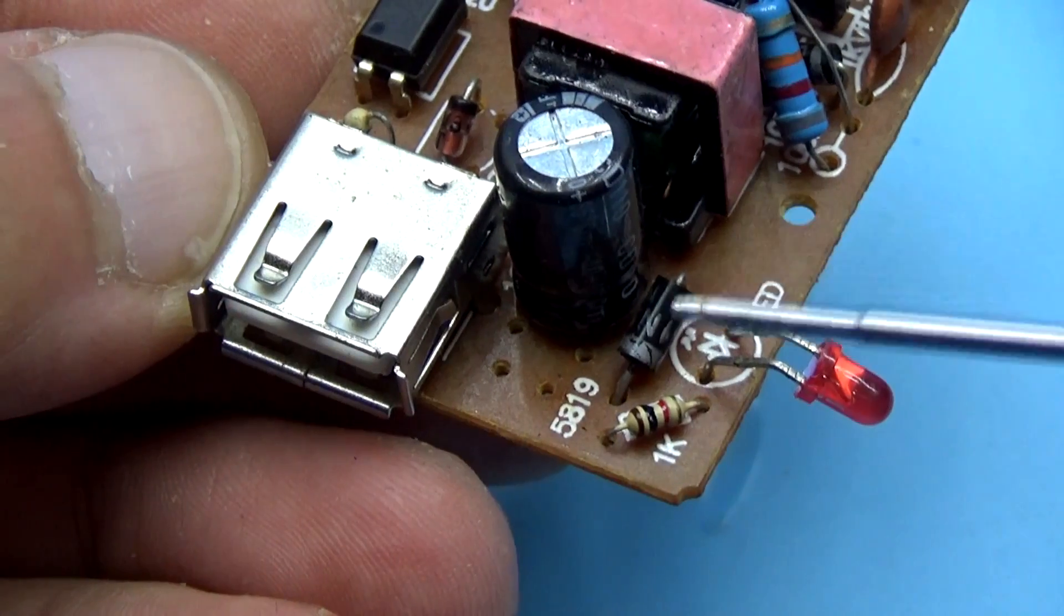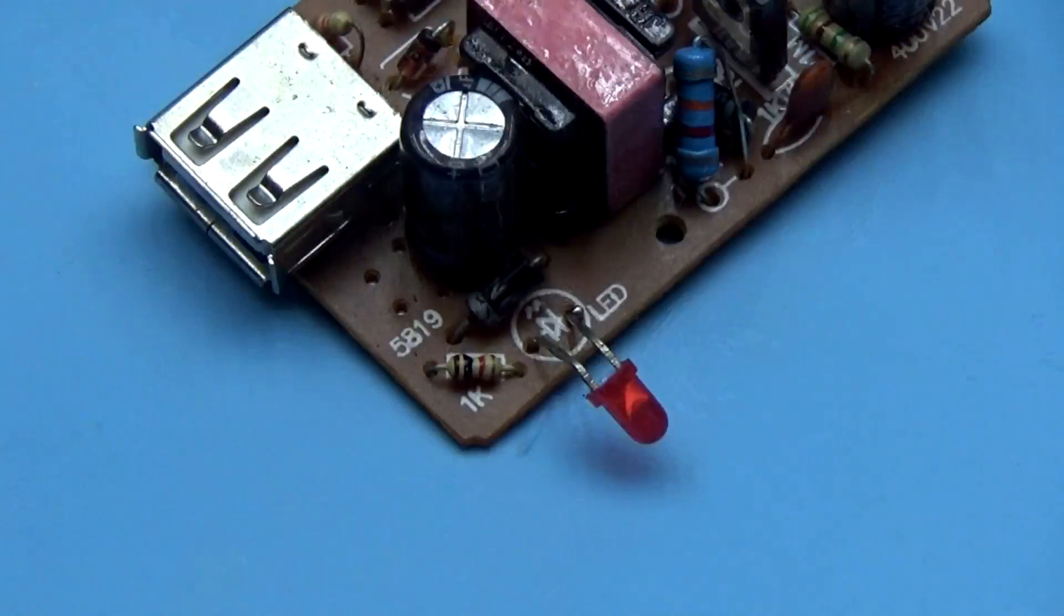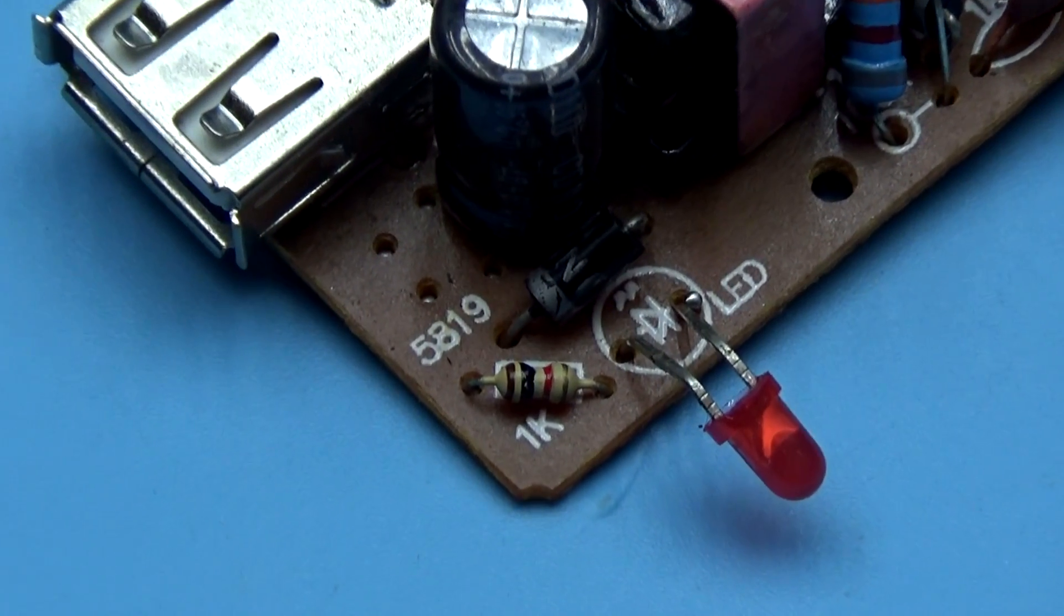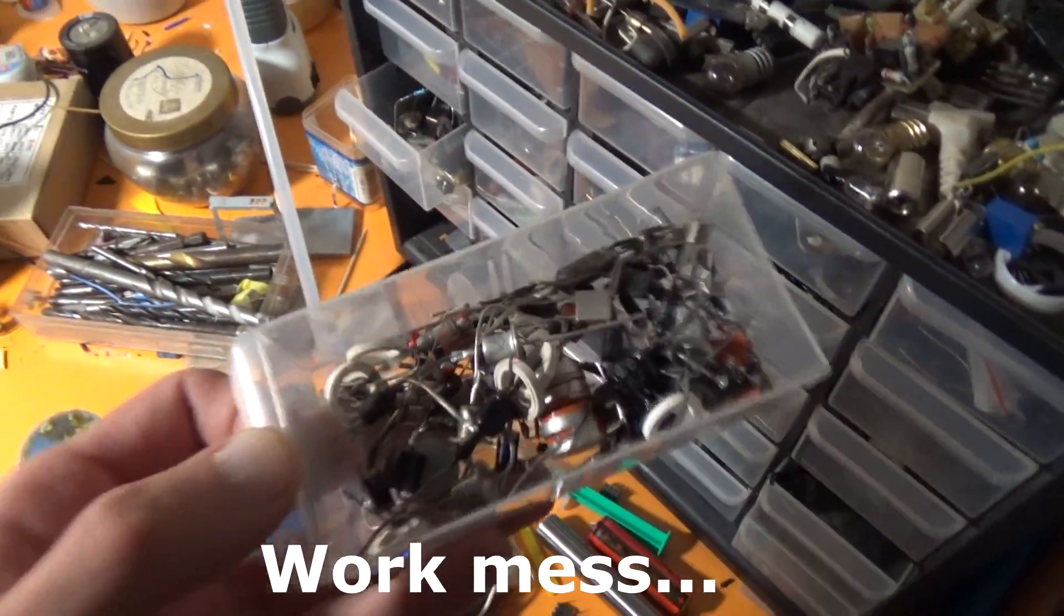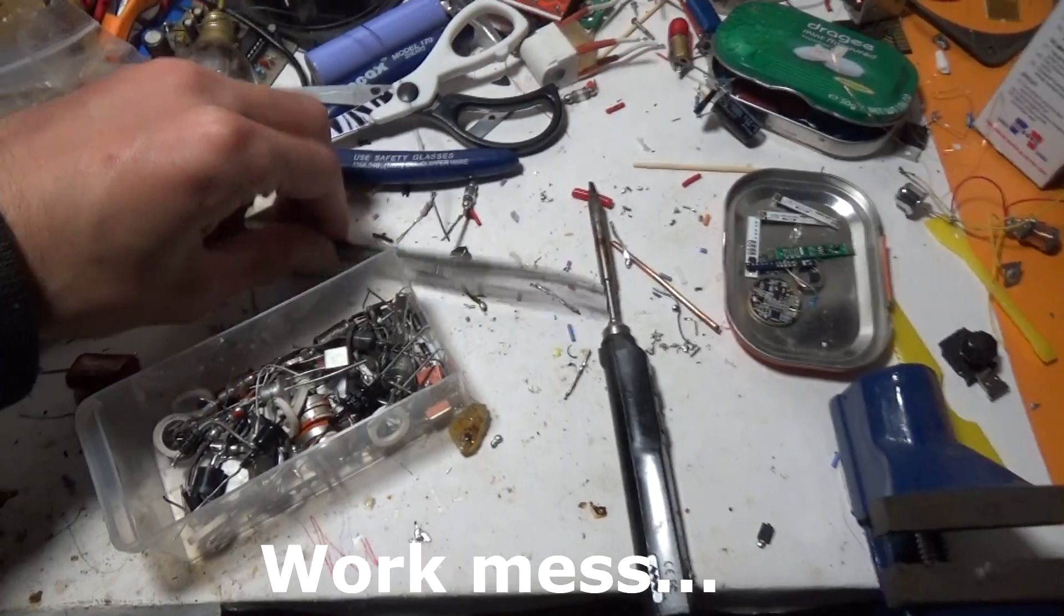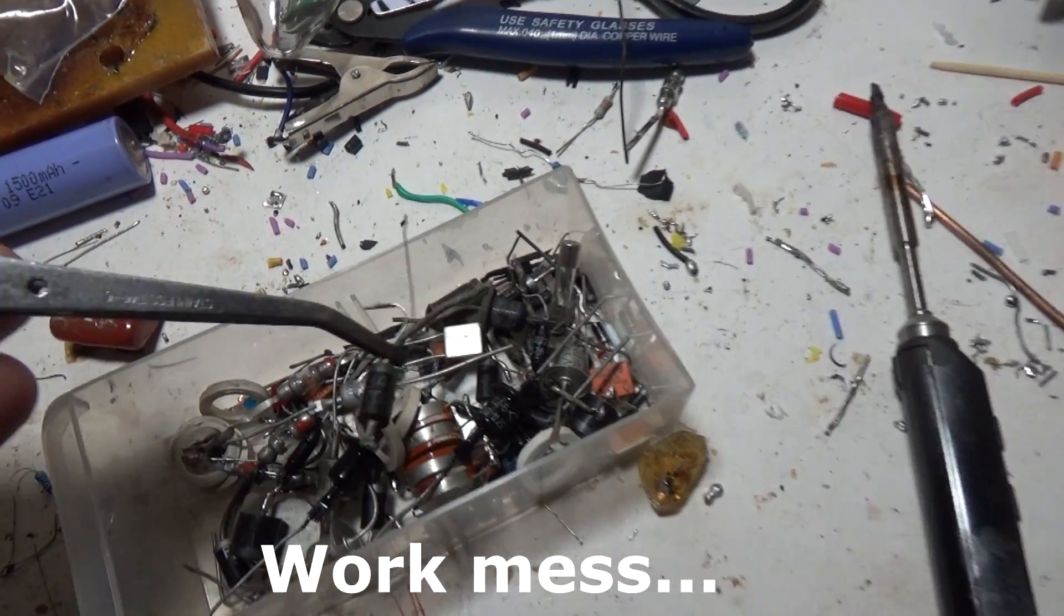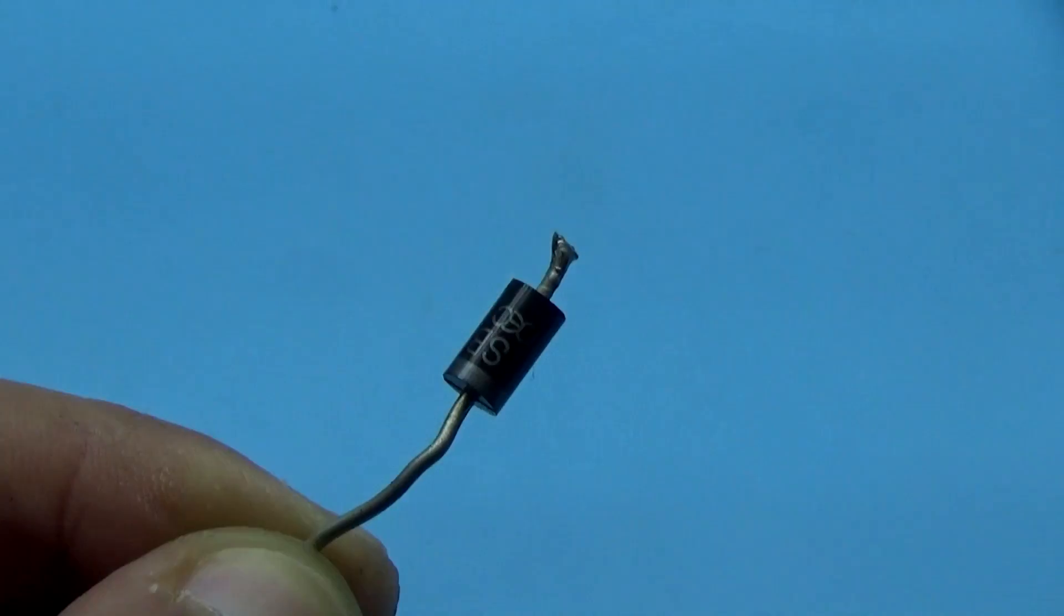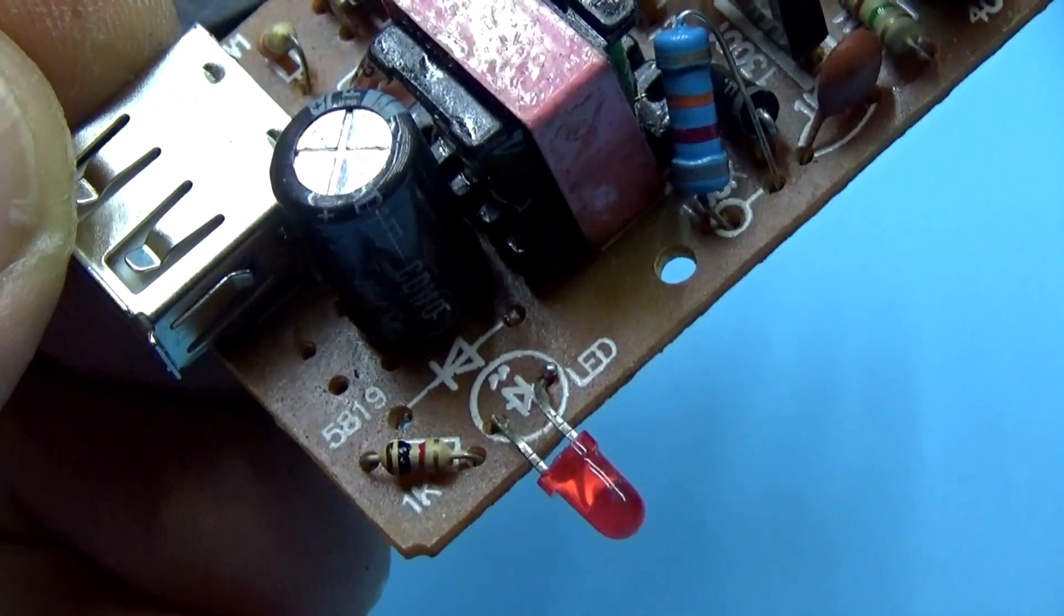Now about the rework. First, we remove the output rectifier. Here installed 1A Schottky diode 1N5819. Next, we find almost any Schottky diode with a current of 2, or preferably 3A. In my case, it is a 3A SB340.